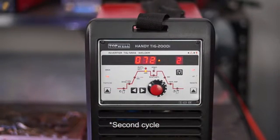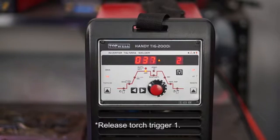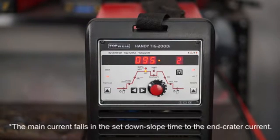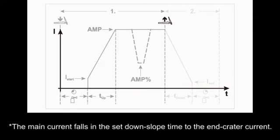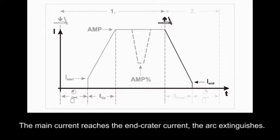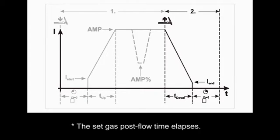Second circle. Release torch trigger 1. The mean current falls in the set downslope time to the end crater current. The mean current reaches the end crater current. The arc extinguishes. The set gas postflow time elapses.